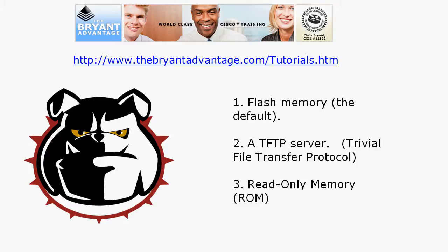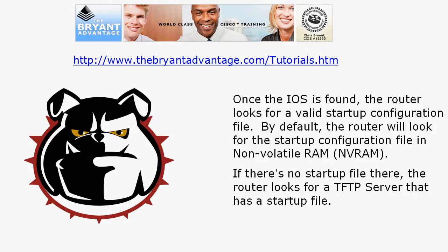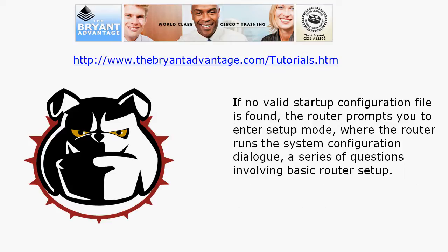Once the IOS image is found, the router looks for a valid startup config file. By default, it first looks in Non-Volatile RAM (NVRAM) — the RAM that doesn't lose its contents on a reload. If there is no startup file there, the router will look for a TFTP server, which is something you as a network admin would have to configure by specifying where to get the router startup config file.